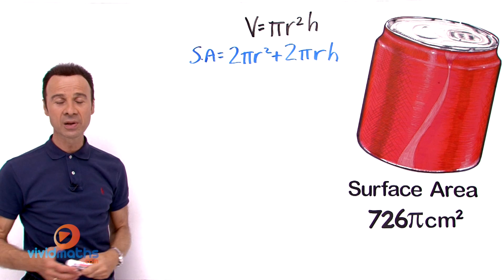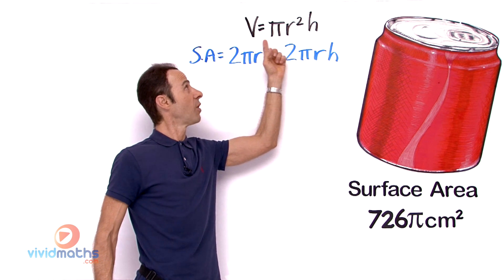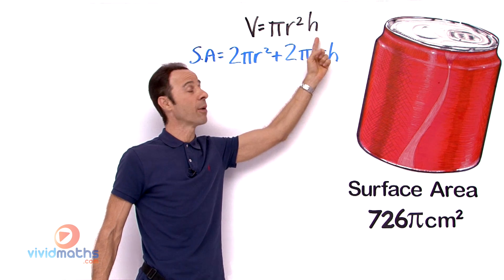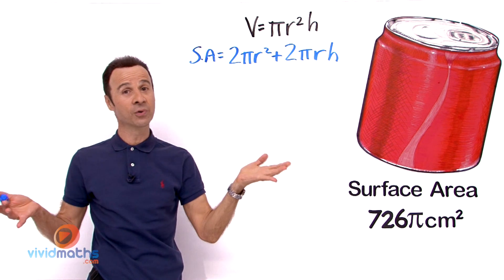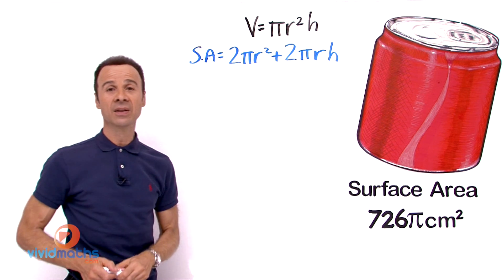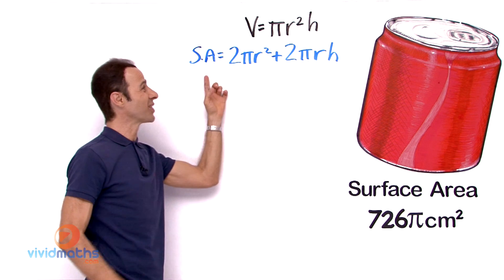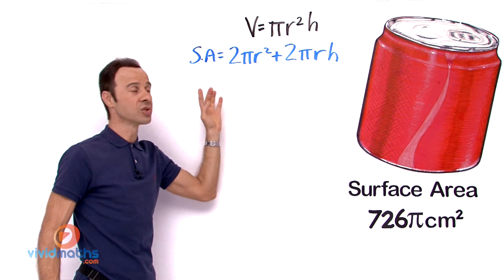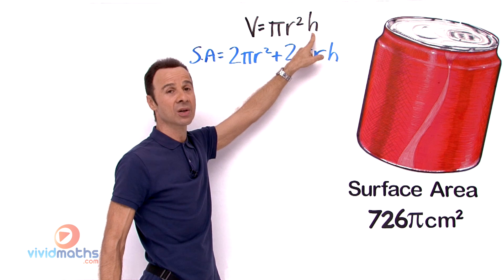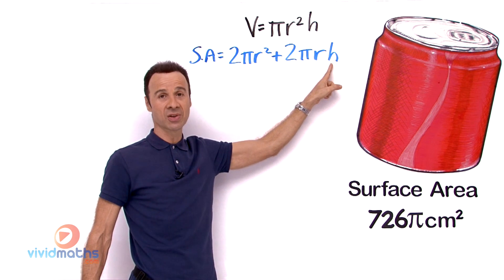Now we want to maximize the volume, but as you can see the volume formula has two variables — r squared and h — and you cannot differentiate that directly. So what we have to do is put the volume into a differentiating-friendly format. To do that we are going to use the surface area formula and replace h by changing the subject, making h the subject.